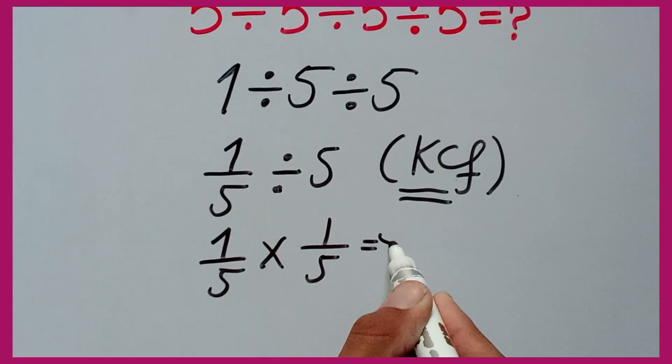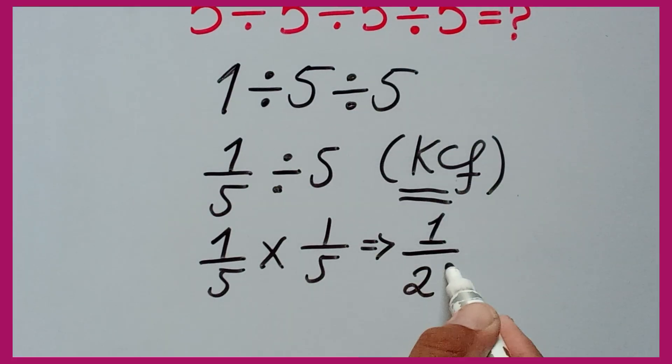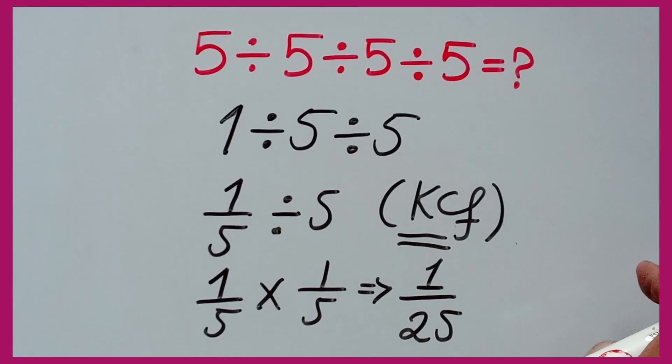Numerator is multiplied to numerator, and denominator is multiplied to denominator. So 1 over 25 is the final answer to this question.